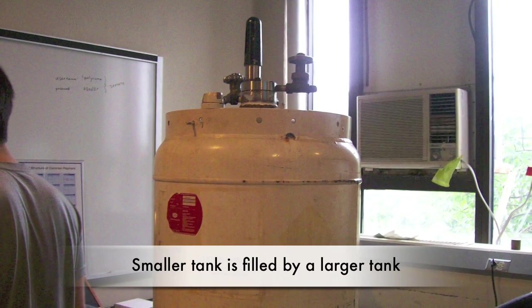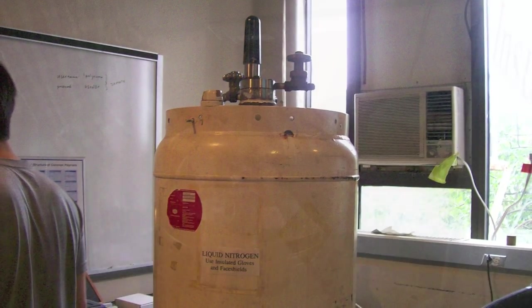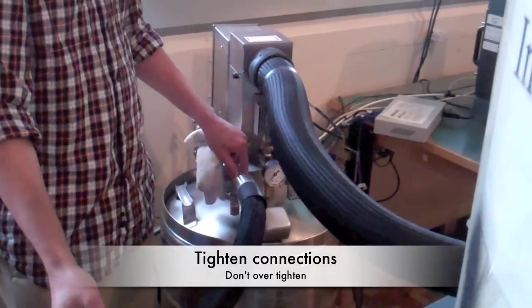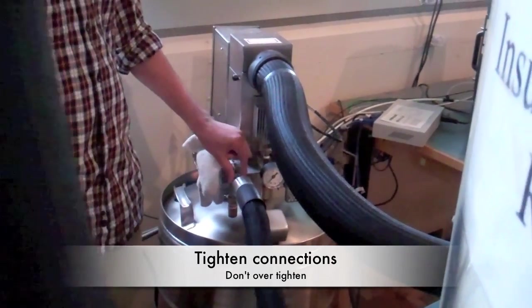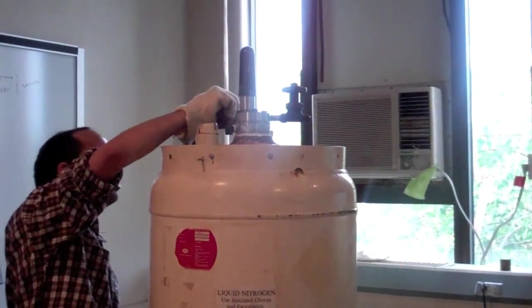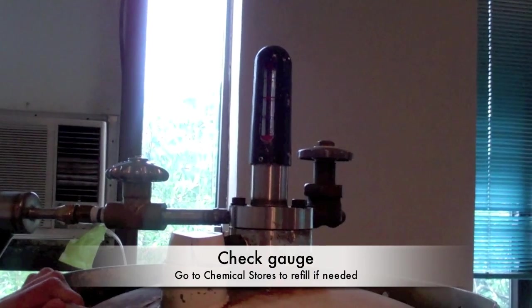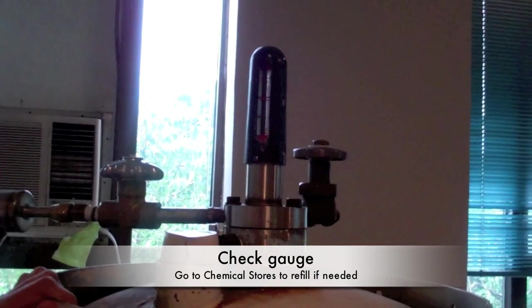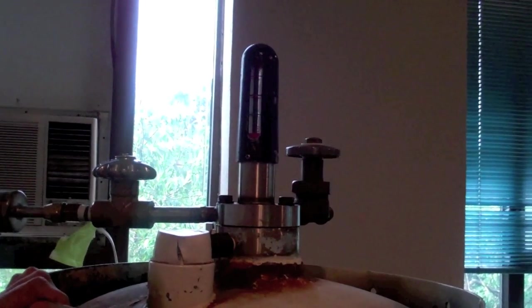To fill the smaller tank that supplies the liquid nitrogen to the DSC, make sure it is securely connected to the larger bulk storage tank. Tighten the connections, but do not over-tighten. Then open the main valve. The gauge at the top shows the level of the larger tank. If it is empty, it will need to be taken down to the chemical stores to get refilled.